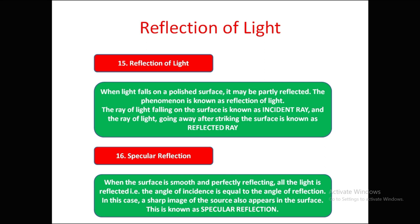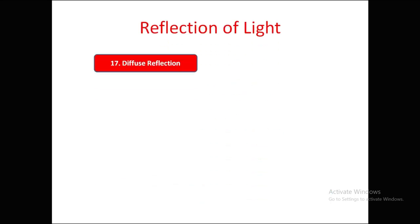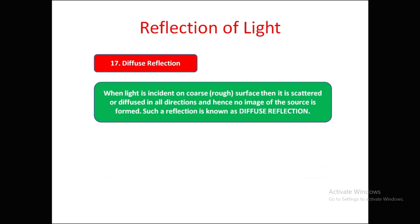Specular reflection occurs when the surface is smooth and perfectly reflecting. All the light is reflected such that the angle of incidence exactly equals the angle of reflection. In this case a sharp image of the source also appears in the surface — it is called specular reflection because the source is visible.